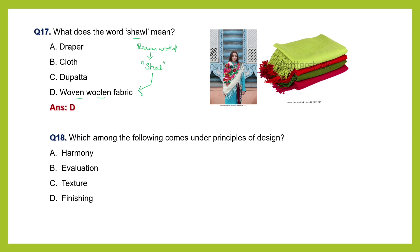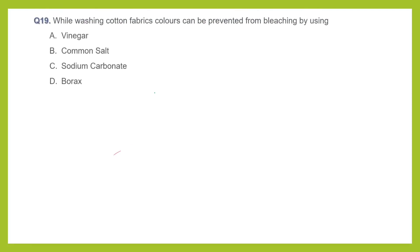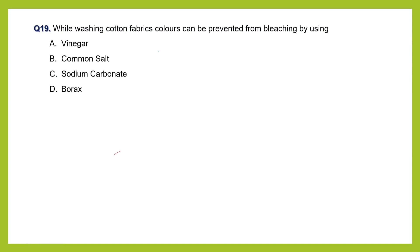Question 18: which among the following comes under the principles of design? Harmony, evaluation, texture, or finishing? There are five principles of design: harmony, balance, rhythm, emphasis, and proportion. So the answer is A: harmony. Question 19: while washing cotton fabrics, color can be prevented from bleaching by using common salt. The answer is B: common salt.